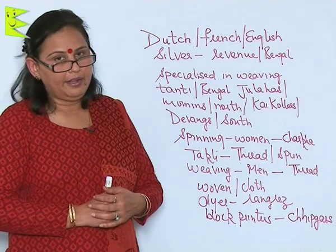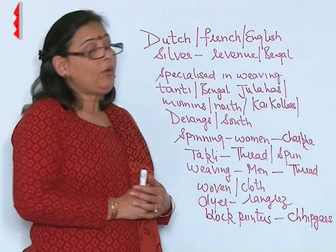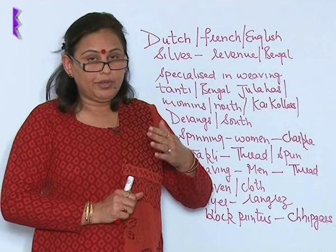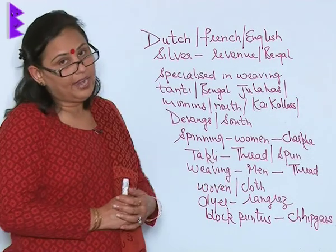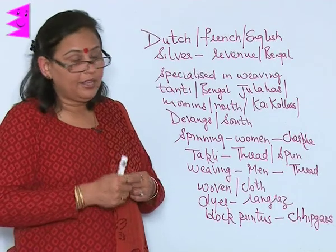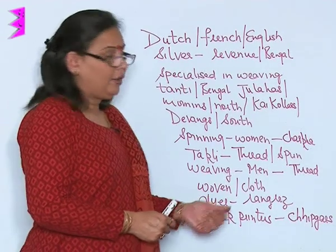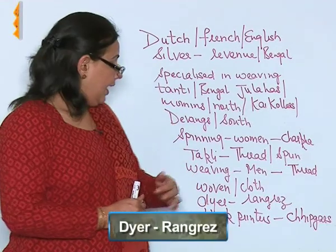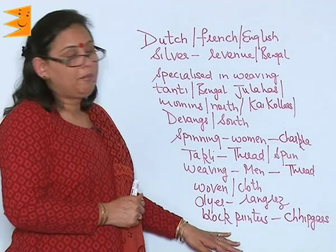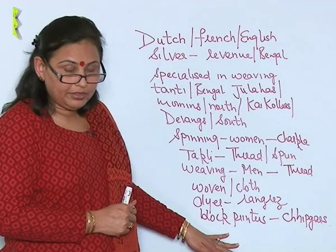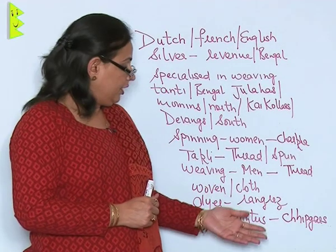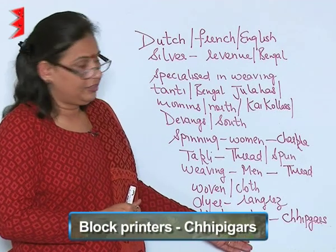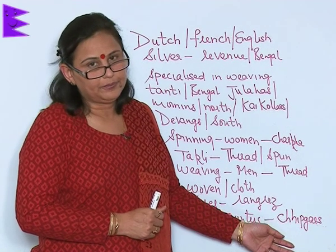Sometimes more than this is required. For example, if you need colored cloth, then you need to get the thread dyed. For dyeing, you go to a dyer who in India is called the rangarej. And if you need block printing for the textile, you go to the block printer, who in India is called the chapaigir.